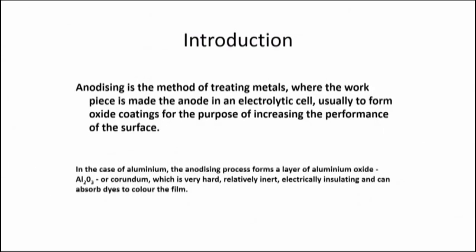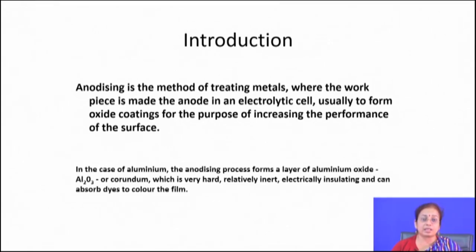For aluminum anodizing, there is formation of a corundum aluminum oxide layer which is very hard, relatively inert, electrically insulating, and can absorb dyes to color the film. Aluminum is used as the anode. Since there is always a thin native oxide layer on aluminum's surface, prior to application the substrate must be polished and cleaned properly. Aluminum surface cleaning is usually carried out using caustic soda solution to dissolve the surface oxides, then rinse with water and dry just prior to anodizing.